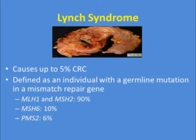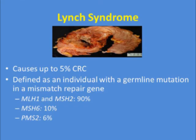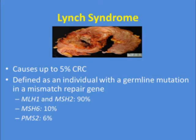Lynch syndrome causes up to 5% of all colorectal cancers. It's defined as an individual with a germline mutation in one of the mismatch repair genes. The two most common mutations are MLH1 and MSH2. MSH6 makes up about 10% of individuals, and PMS2 accounts for about 6% of mutations found in Lynch syndrome patients.